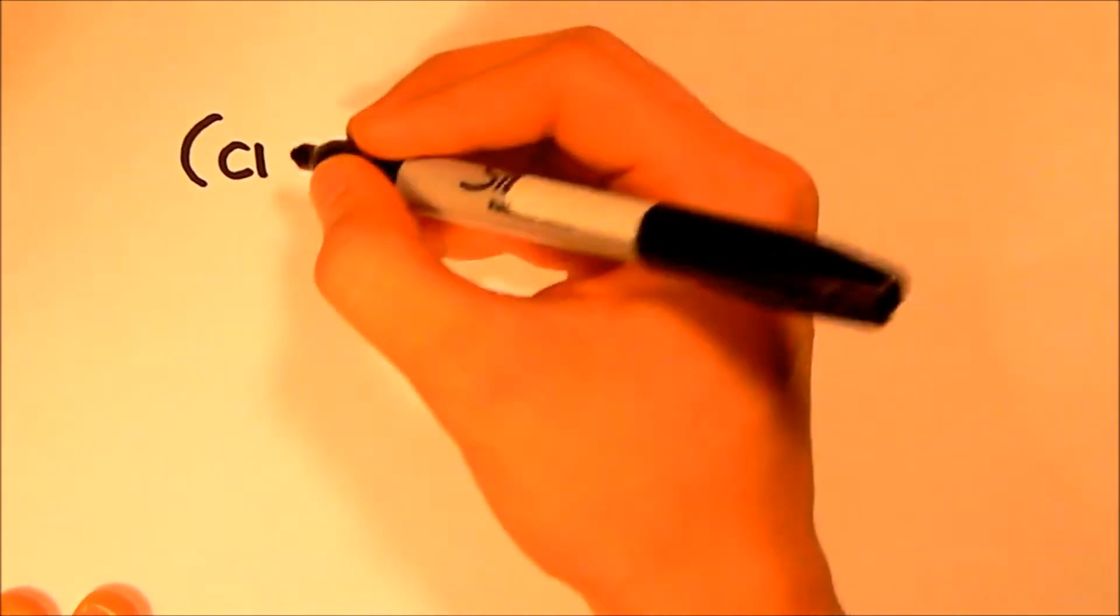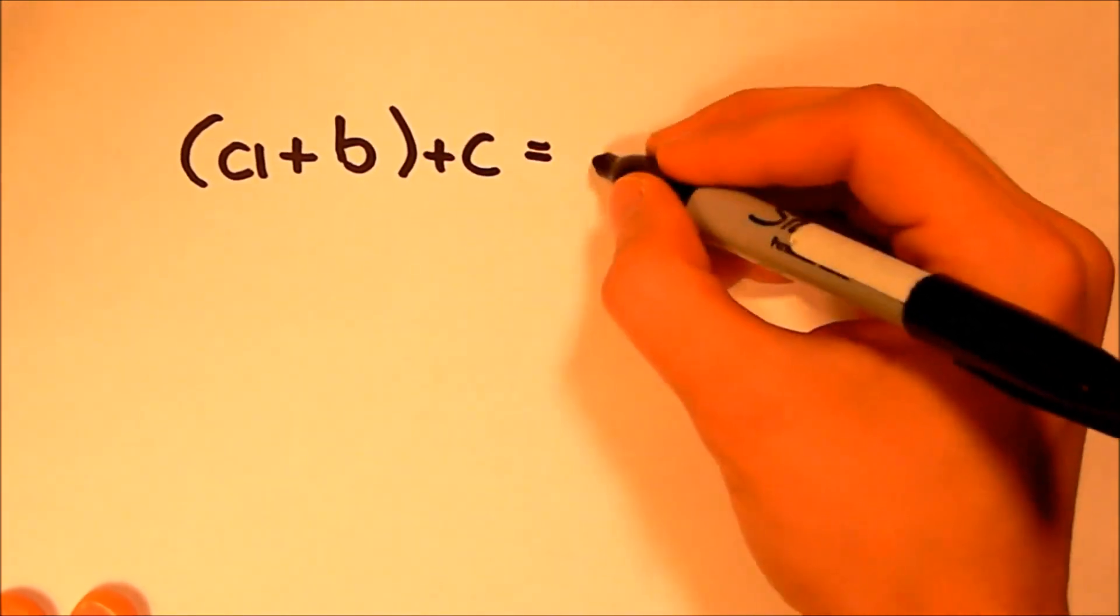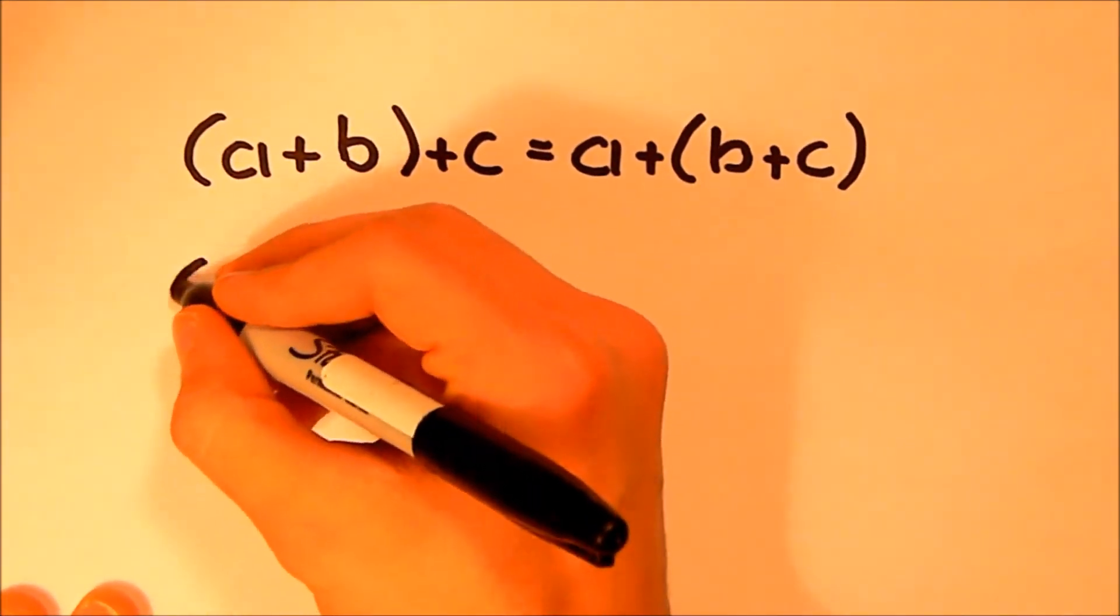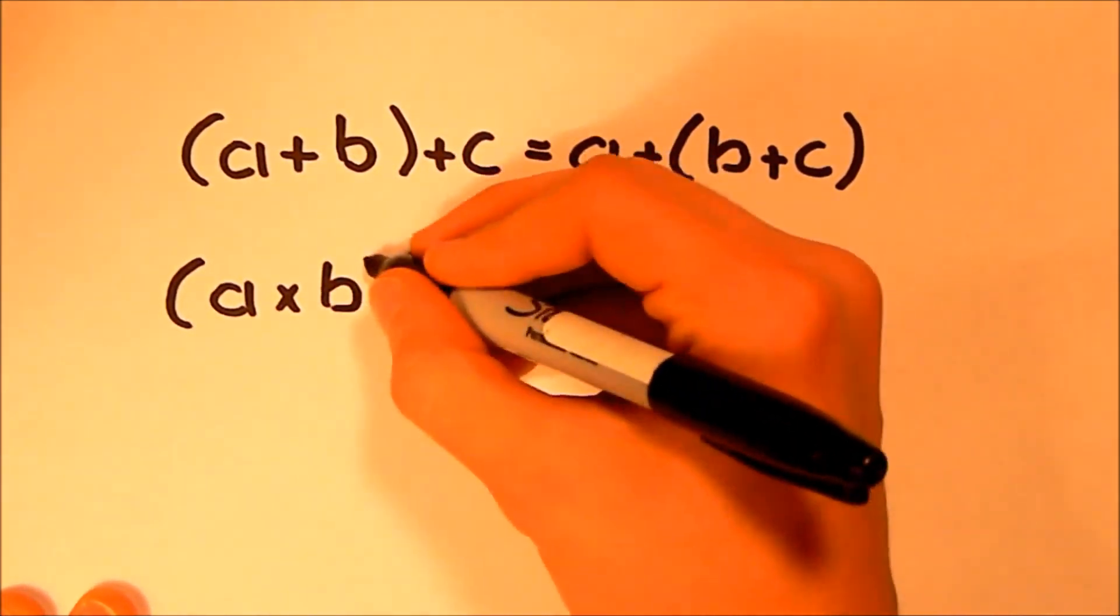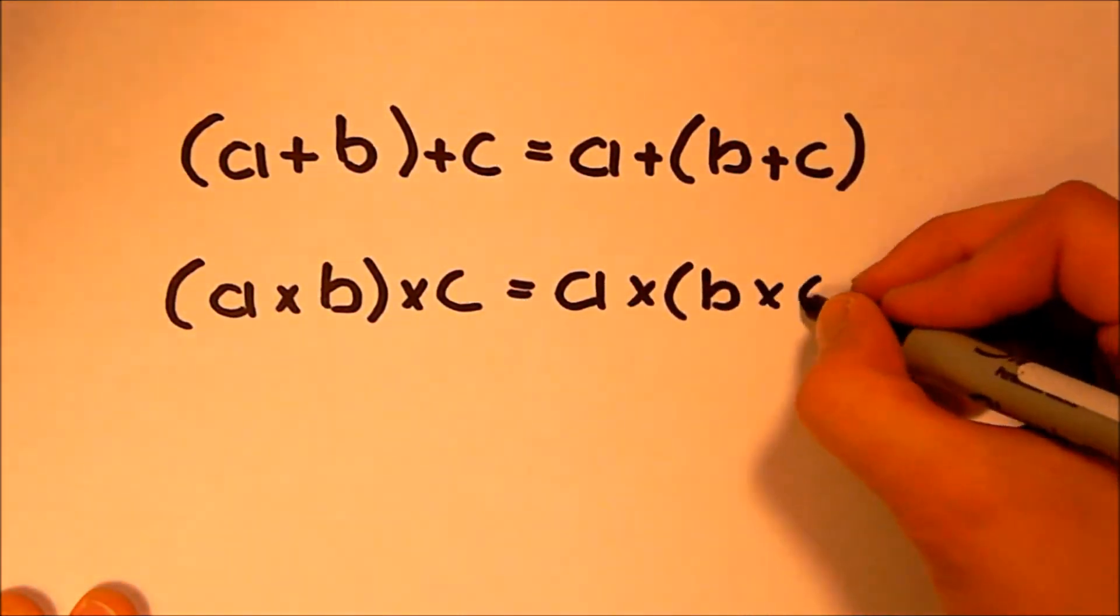In more algebraic terms, the quantity of a plus b plus c equals a plus the quantity of b plus c, and the quantity of a times b times c equals a times the quantity of b times c.